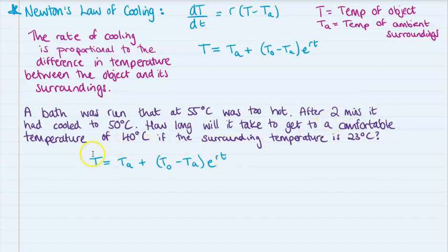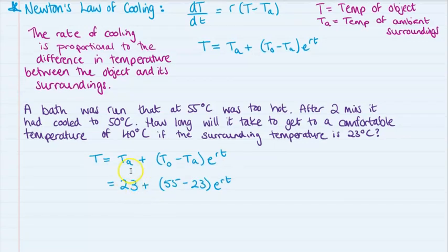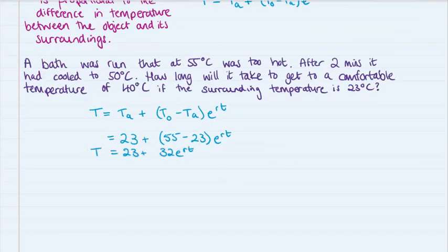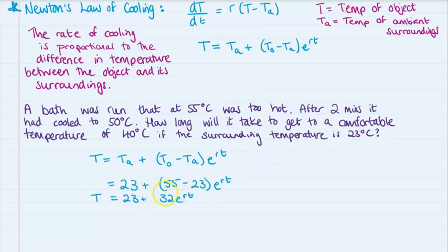So we start with setting up the equation as we just saw above, just up here. And then we put in the information that we know. So we have the ambient temperature is 23 degrees. So that's the temperature of the room. The difference between the starting temperature, so T0 and the ambient temperature. So that's 55 take away 23. And then e to the rt. So if we carry on with that, we get, we're just going to simplify that down to this.